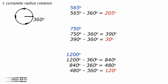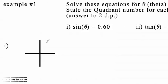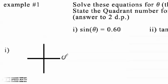And now to the problems. Example number 1: solve these equations for theta, where theta is greater than 0 degrees and less than 360 degrees, and state the quadrant number for each solution, answered to two decimal places. Number 1: sine theta equals 0.60. Number 2: tan theta equals minus 1.2. Number 3: cosine theta equals minus 0.67. The first thing we need to do is to visualize the problem, so we start with our axes and the angles anticlockwise from 0 degrees: 90, 180, 270, and 360 degrees, labelling the four quadrants 1, 2, 3, 4.